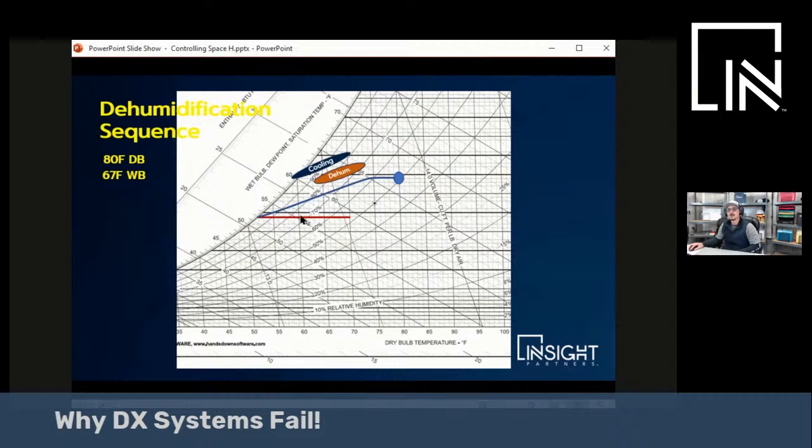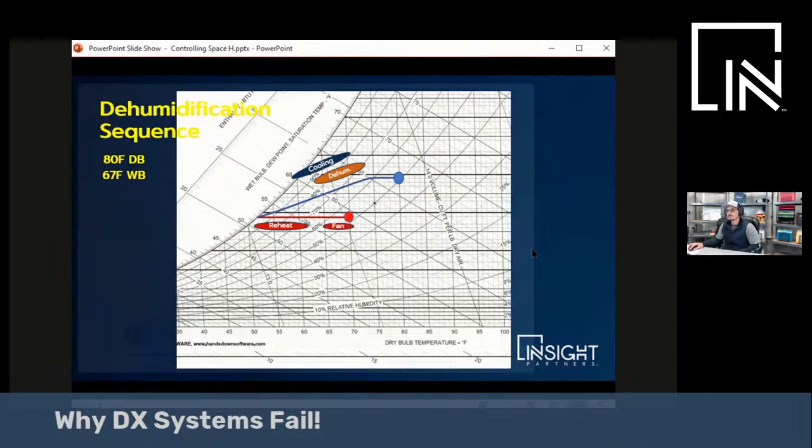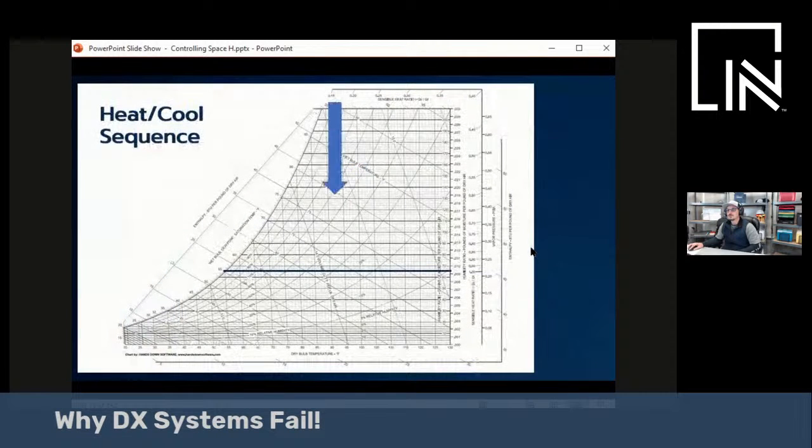We would heat the air back up along this line here using the reheat. And then we get a couple degrees from the fan heat arriving at our predetermined leaving air temperature, which is determined basically by the unit control.